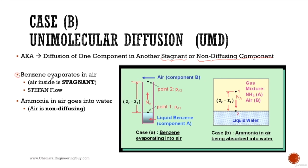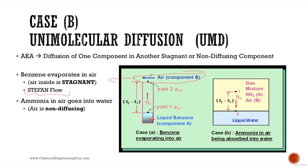The first example: imagine you have a tube in the lab with some liquid benzene and air above it. Benzene is volatile and it's going to vaporize, so some benzene is going to go up. This specific case is called Stefan Flow, where the benzene composition starts low and increases as it moves through the tube. As time passes, evaporation continues and the distance increases.